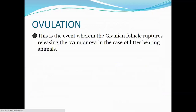Ovulation is the event wherein the Graafian follicle — the mature follicle containing the ovum — ruptures, releasing the ovum, or ova in the case of litter-bearing animals such as dogs, cats, and pigs.